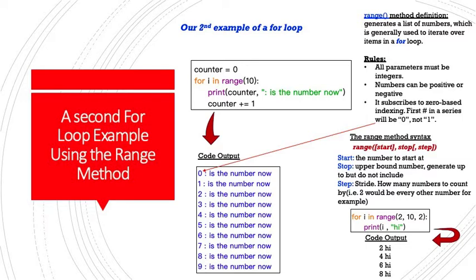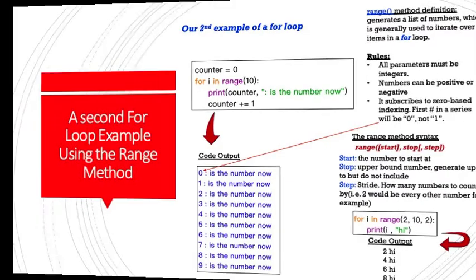So if we look at the main piece of code here, for I in range 10, print counter, and then a literal is the number now, and then counter plus equals 1, you see what happens every time we iterate through. First of all, we have 10 iterations between the numbers of 0 and 9. We have no stride or no step, and each time it just prints out what the counter is for that particular iteration, and you see it goes in order, 0 to 9, and it prints out our literal string every time.